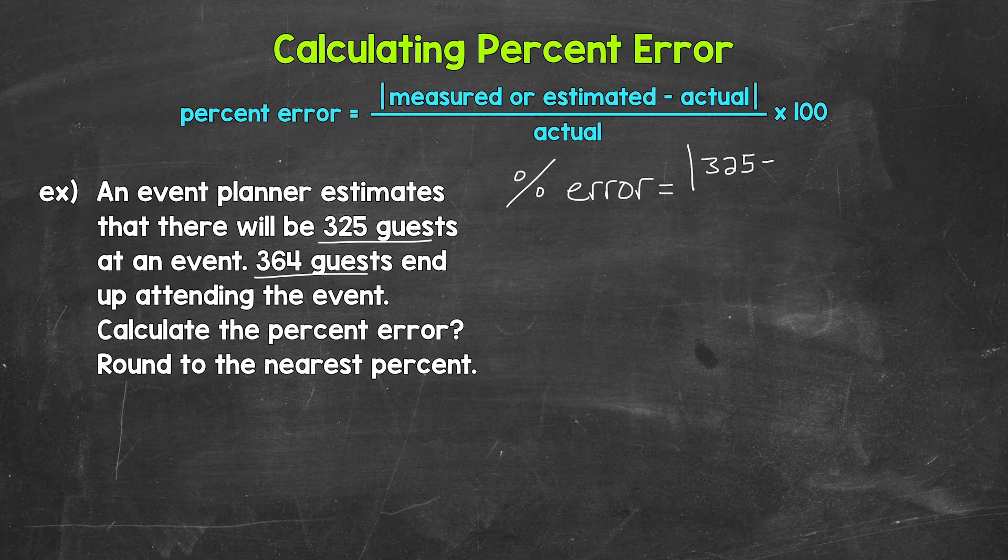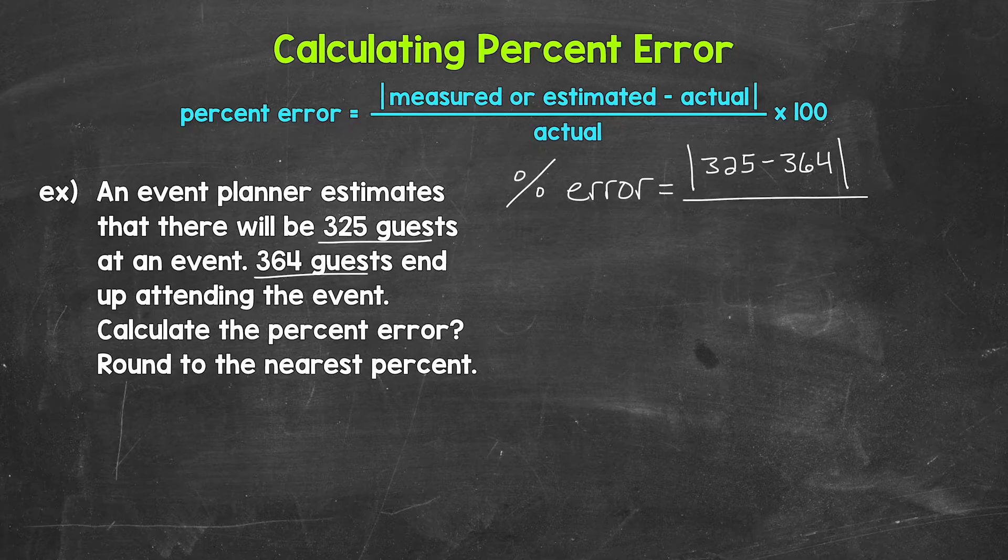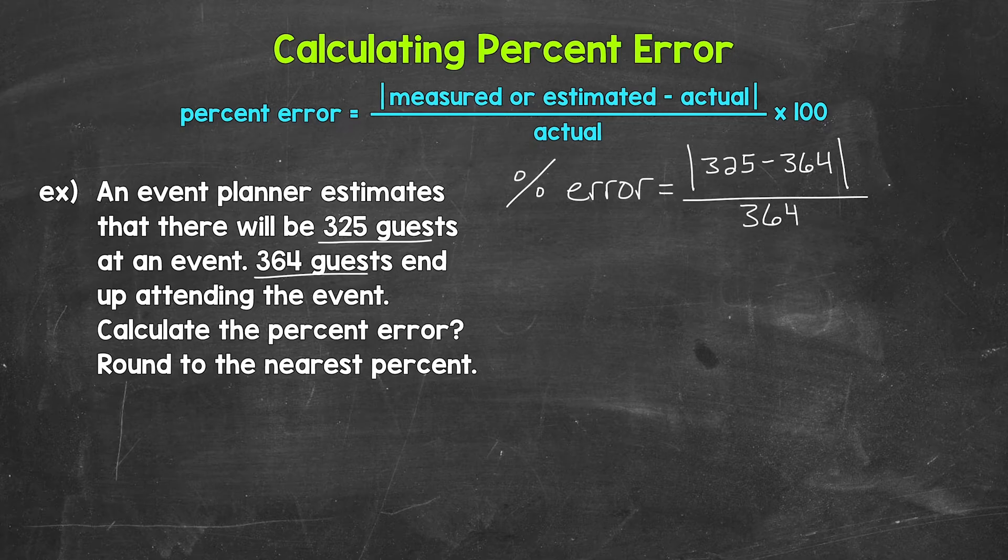That's 364 divided by the actual value, so 364 times 100. Now we can work through this, starting with the subtraction.